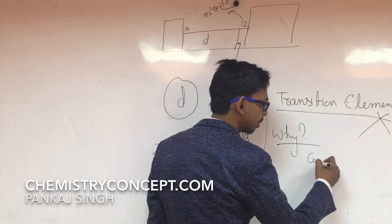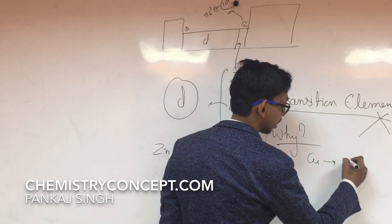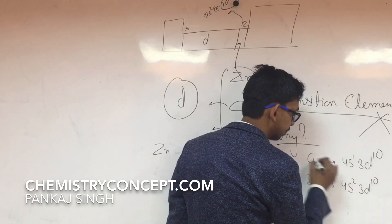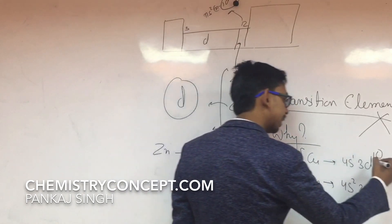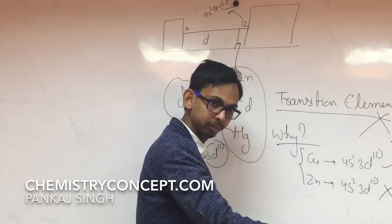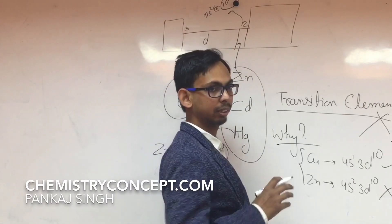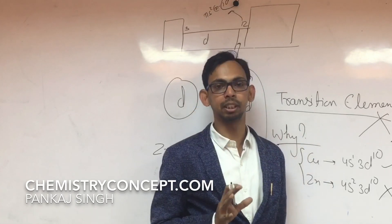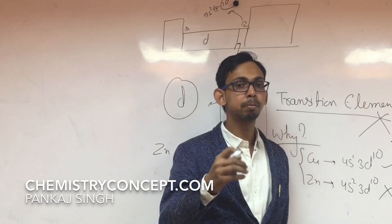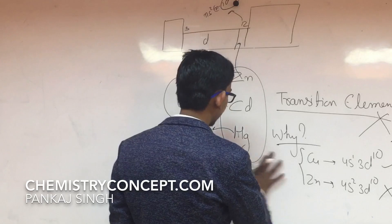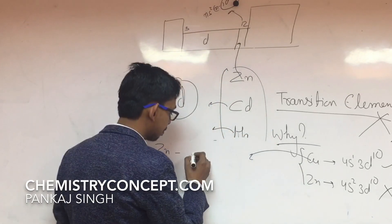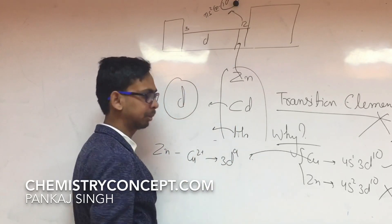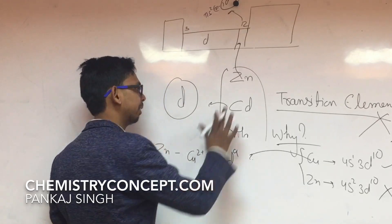There is one more question: if we talk about copper, the electronic configuration of copper is 4s1 3d10, and zinc is 4s2 3d10 — they both are D10. But copper is considered a transition element while zinc is not. Why? Going back to the definition carefully: a transition element is one which has an incompletely filled D sub-shell either in its ground state or in its most common oxidation state. Copper is D10 in ground state, but Cu²⁺ is 3d9 — so it has an incompletely filled D sub-shell in its most common oxidation state.